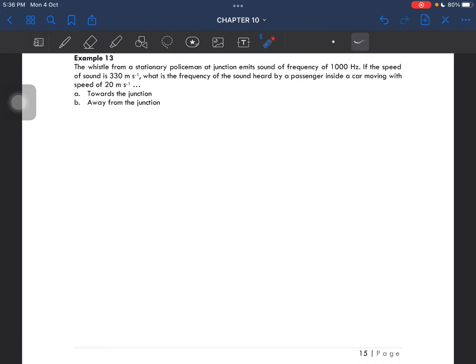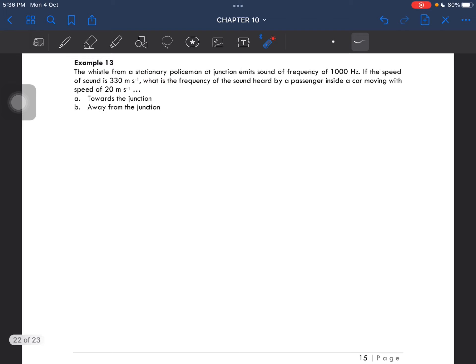Okay, last example for this chapter. The whistle from a stationary policeman at a junction emits sound of frequency 1000 hertz. If the speed of sound is 330 meters per second, what is the frequency of the sound heard by a passenger inside a car moving with speed of 20 meters per second?